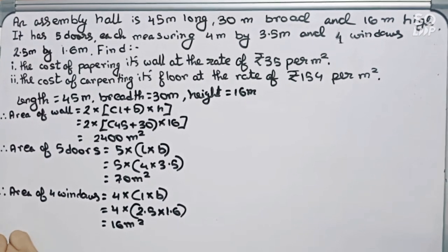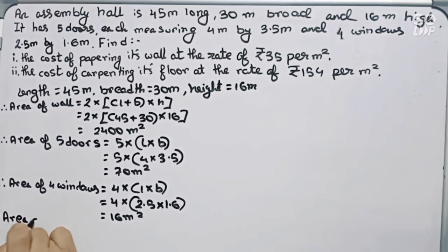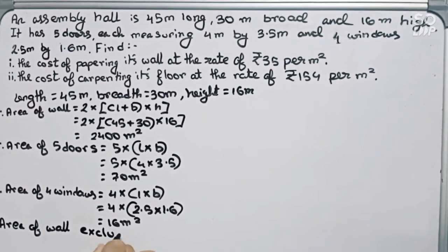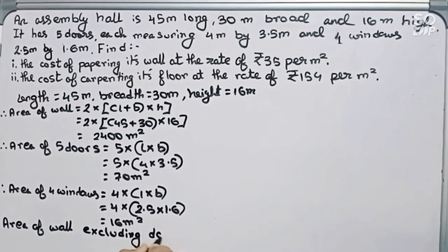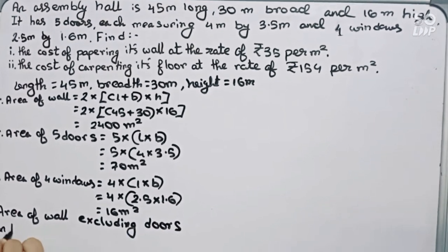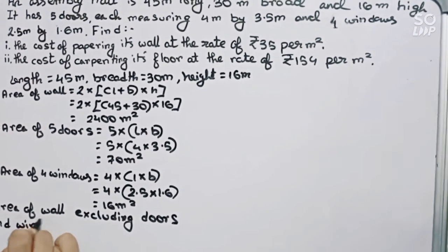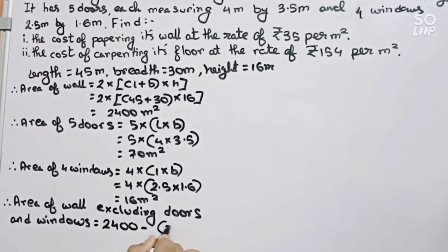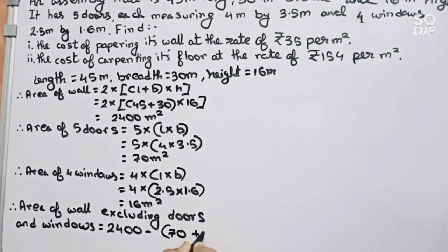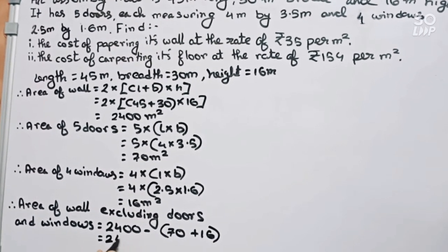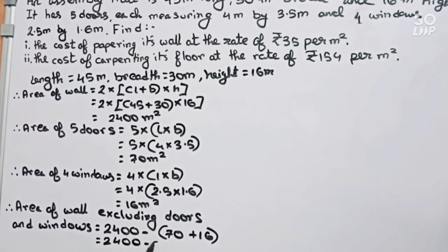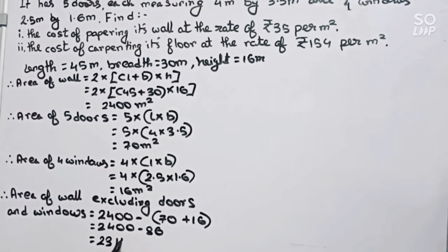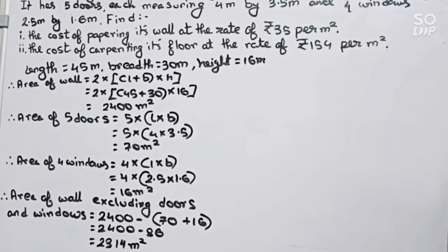Now I have to find the area of 4 walls excluding doors and windows. Therefore, area of 4 walls excluding doors and windows equals 2400 minus 70 minus 16, which becomes 2314 meter square. So this is the area of 4 walls excluding the doors and windows.